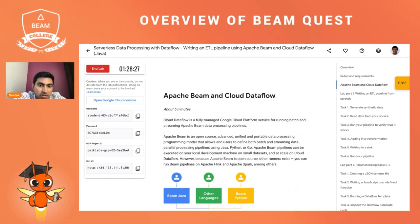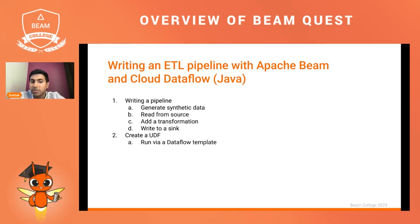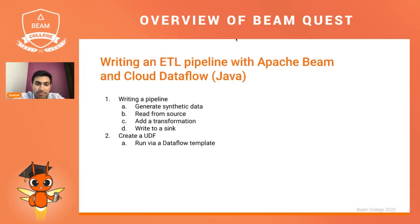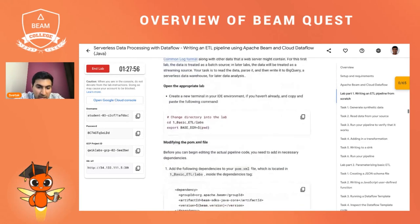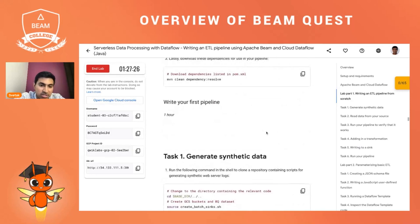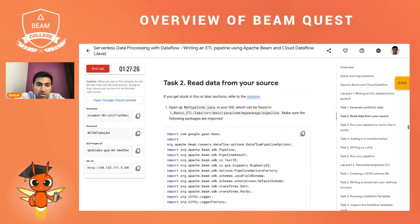For what this lab actually covers: the first part talks about writing a pipeline in Java. We'll start with generating synthetic data, then reading from a source, adding a transformation, and writing to a sink — essentially all the steps in an end-to-end pipeline. The second part is creating a user-defined function, and we're going to run this via a Dataflow template. The lab includes images and text explaining these concepts, along with commands that ensure you're writing your code in the right place and in the right directory.